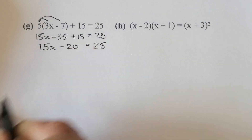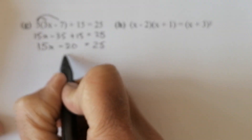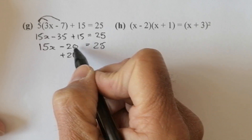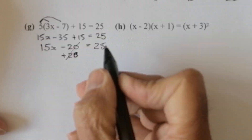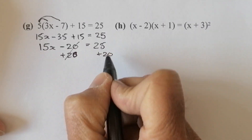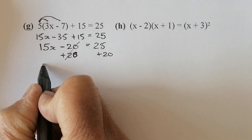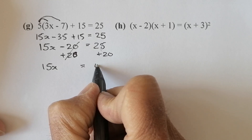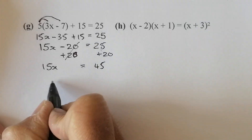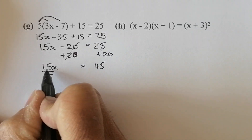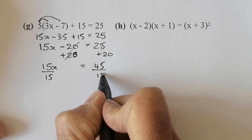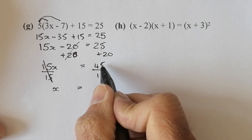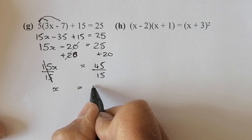I don't want that number on the left-hand side, so I'm going to add 20 onto both sides — that will eliminate the minus 20. That leaves me with 15x equal to 45. All I'll do is divide by 15 to get x on its own — if I divide on the left I must divide on the right. That leaves me with x equal to — 15 goes into 45 three times. So x equals 3.